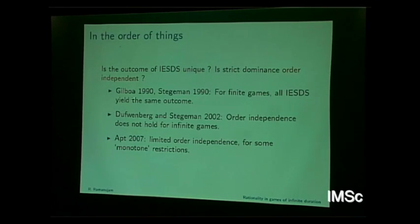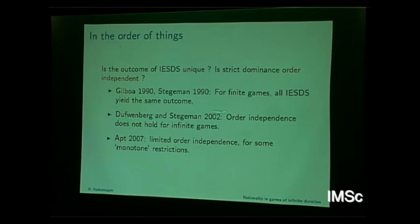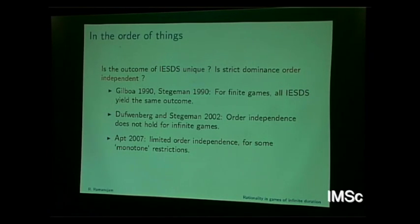You can ask: is the outcome of this procedure unique? You can either remove dominated strategies simultaneously or in some order — will we get different outcomes if we do it in different order? Is strict dominance order independent? This was only shown in 1990 for finite games, that all these different orders yield the same outcome. Dufwenberg and Stegeman in 2002 showed that order independence does not hold in general for infinite games, and Apt in 2007 had a theorem showing some kind of order independence with a monotone restriction.